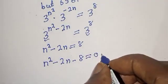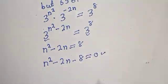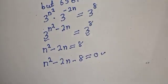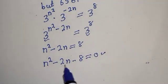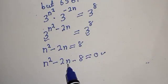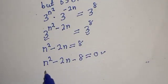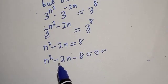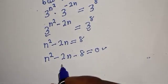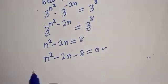Then n squared minus 2n minus 8 equals 0. This is a quadratic equation, which can be solved using the factorization method or the quadratic formula. In this case we are going to make use of the quadratic general formula.